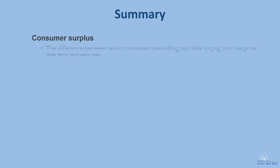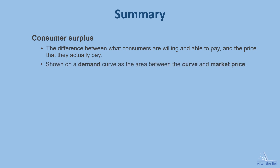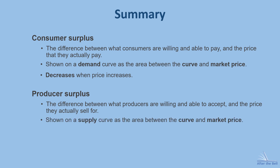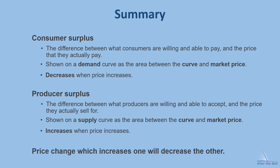In summary, we've defined consumer surplus as the difference between what consumers are willing and able to pay and the price they actually pay. We've shown that it appears on the demand curve as the area between the curve and the market price, and concluded that consumer surplus decreases when price increases. For producer surplus, the definition was the difference between what producers are willing and able to accept and the price they actually sell for. We saw it on the supply curve as the area between the curve and the market price, and said that it increases when price increases. Finally, we saw how whenever there's a price change — higher or lower — one of the surpluses will increase while the other one decreases.